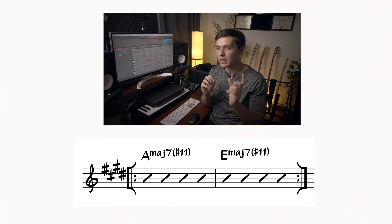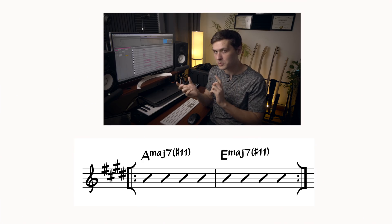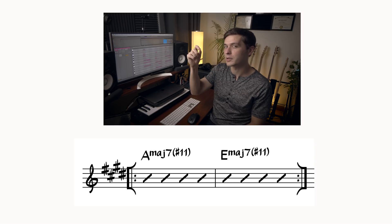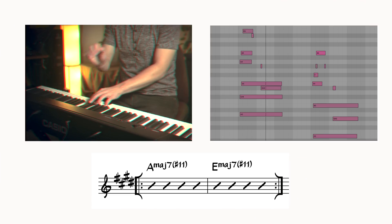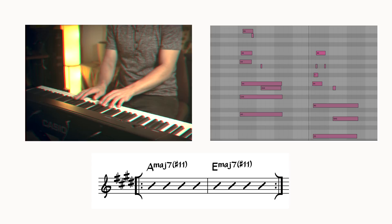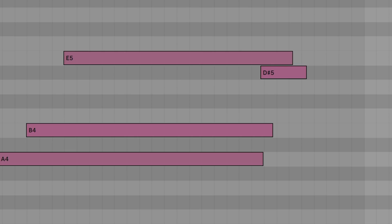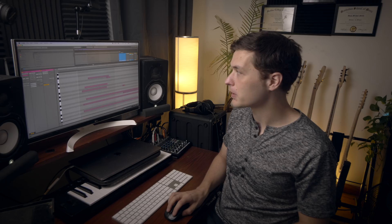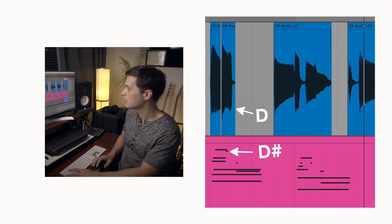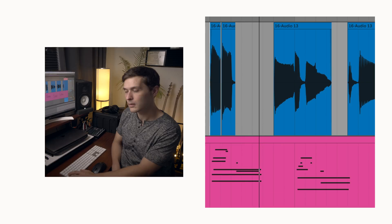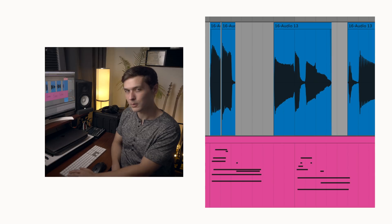If we check out the piano part for that lo-fi tune, the chords are kind of going back and forth between A-major 7-sharp 11 and E-major 7-sharp 11 in the upper register. The sharp 11 of an A-major 7-sharp 11 is the D-sharp, which is a pretty spicy cross relationship with the D-natural of the bass.